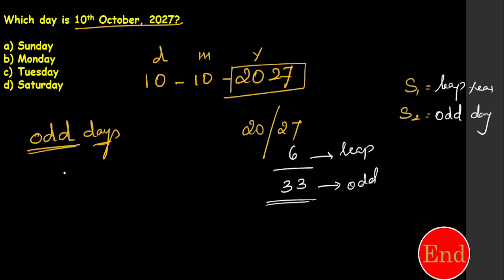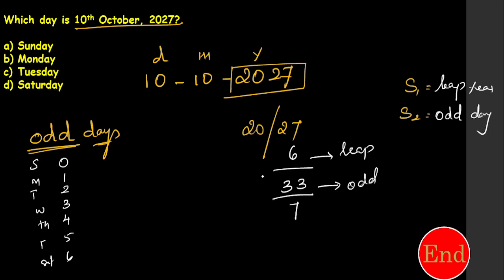Odd days must always be from 0 to 6, corresponding to Sunday through Saturday. If the number is more than 6, divide by 7 and take the remainder. So 33 divided by 7 — seven 4's are 28, remainder is 5. The odd day for the year part 27 is 5.